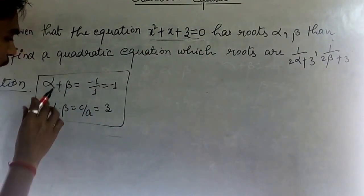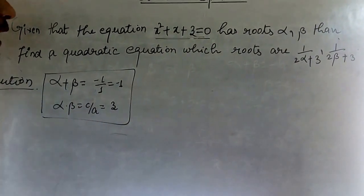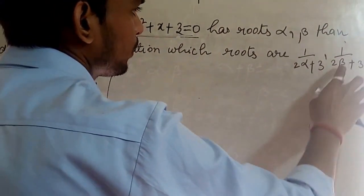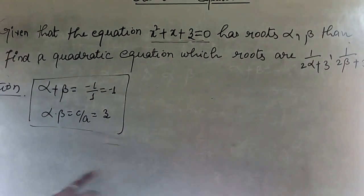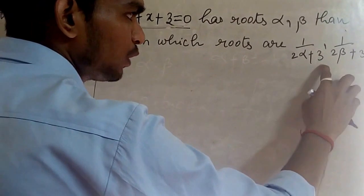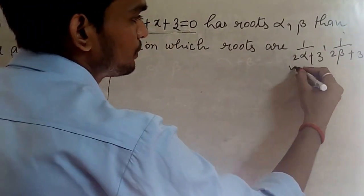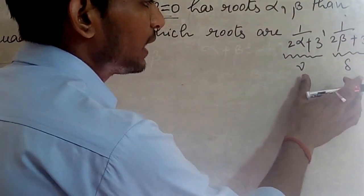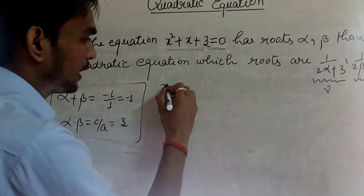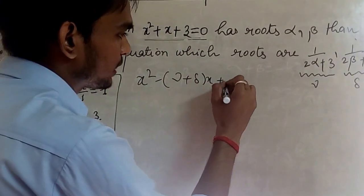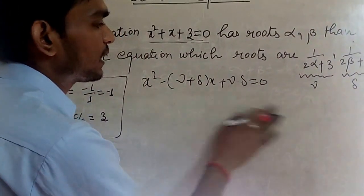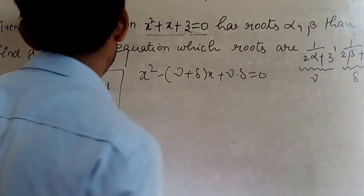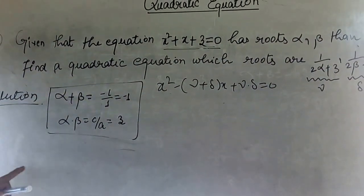We now know alpha + beta = −1 and alpha × beta = 3. We need to find the equation whose roots are 1/(2alpha + 3) and 1/(2beta + 3). Let gamma = 1/(2alpha + 3) and delta = 1/(2beta + 3). If we find gamma + delta and gamma × delta, then using the formula x² − (gamma + delta)x + (gamma × delta) = 0, we get the required quadratic equation.